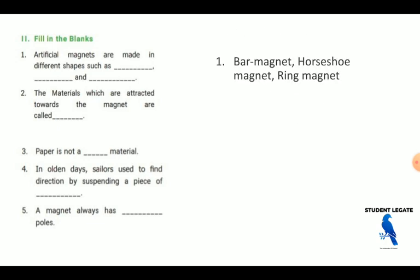The material which attracts towards the magnet is called magnetism, magnetic substance. Paper is not a magnetic substance.